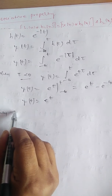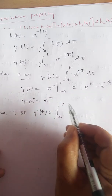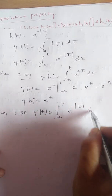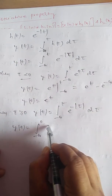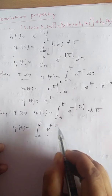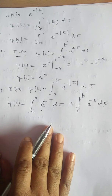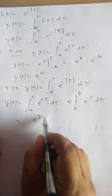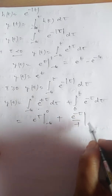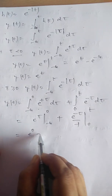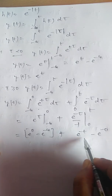When τ ≥ 0, y(t) = integral from minus infinity to 0 of e^(+τ) dτ + integral from 0 to t of e^(−τ) dτ. This gives [e^τ] from −∞ to 0 + [e^(−τ)/(−1)] from 0 to t = (e^0 − 0) + (e^(−t) − e^0)/(−1) = 1 + (e^(−t) − 1)/(−1).